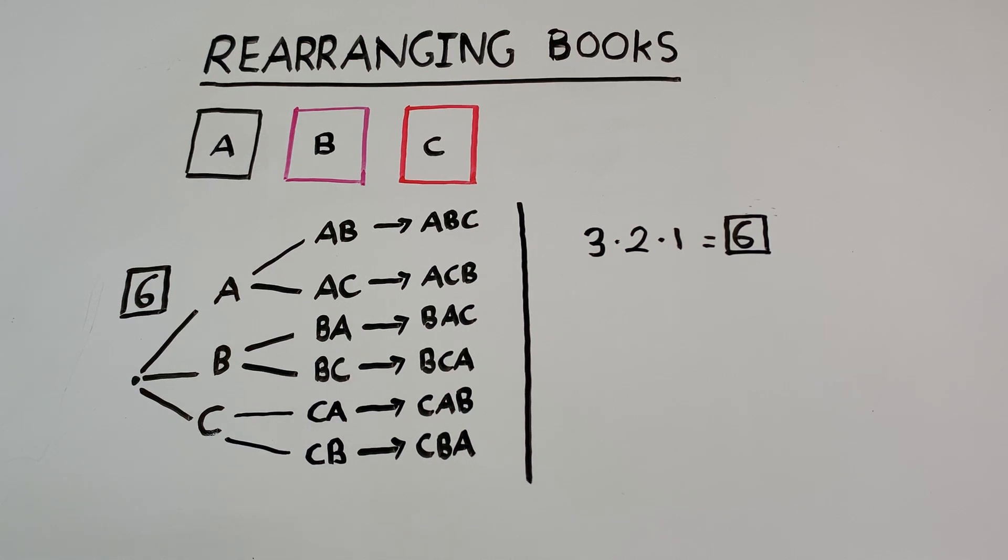So this problem is an example where our later choices depend on some of our previous choices. So this is very different from some of the problems that we've been doing before. Before, in the license plate problem, for example, where we were allowed repeats, we could repeat a letter or repeat a digit.